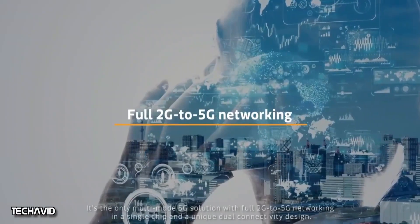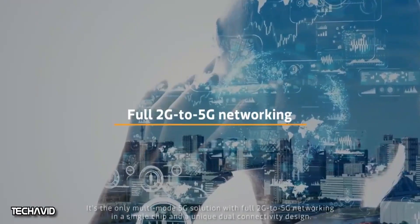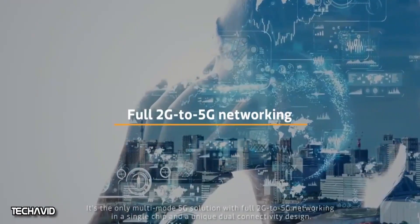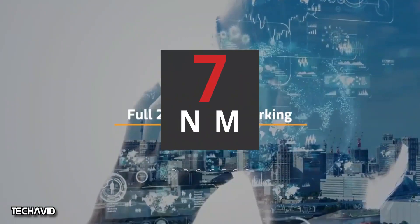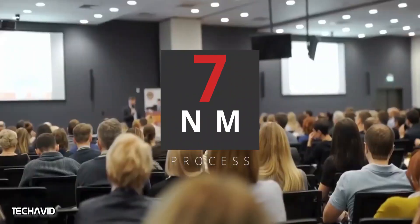Let's continue with our comparison. First, both the Dimensity 800 and Snapdragon 765 are built on 7nm process nodes.